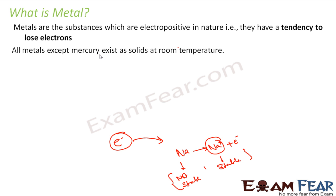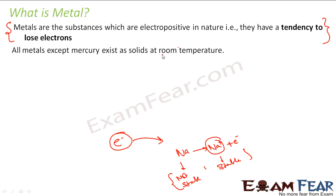All metals except mercury are solid. So if you take any metal — gold, silver, sodium, potassium — they are all solid at room temperature. Mercury is the exception. The primary definition of a metal for us is that it has a tendency to lose electrons, and we observe that all metals are solid at room temperature except mercury.